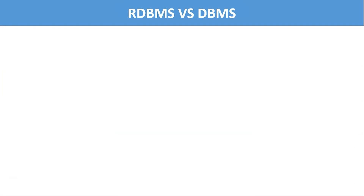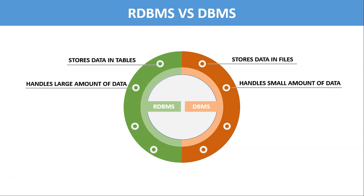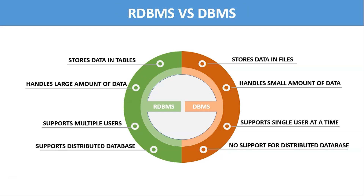RDBMS vs DBMS. Both are used to store physical data in databases, but there are some key differences. RDBMS stores data in tabular form, whereas DBMS stores data in individual files for an application like XML or JSON format. RDBMS deals with vast amounts of data, whereas DBMS is designed to handle small amounts of data and is meant for small organizations. RDBMS can support multiple users, whereas DBMS is limited to a single user. RDBMS also supports distributed databases — managing and accessing multiple databases at the same time — whereas DBMS does not offer support for distributed databases.